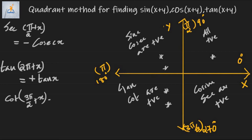For cot(π/2 + x), the value lies in the second quadrant where cot is negative, so the final result will be negative. Since the sum is taken with an integral multiple of π/2, cot changes to its co-function which is tan x. So cot(π/2 + x) = −tan x.